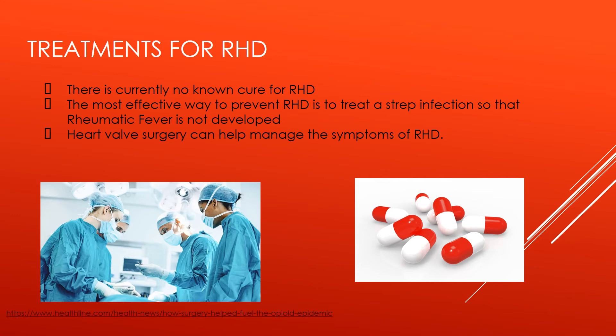There is currently no known cure for rheumatic heart disease, but the most effective way to reduce the risk is by preventing it. This is done by preventing the development of rheumatic fever, using antibiotics to treat strep infections, and using anti-inflammatory medicines to reduce inflammation of the heart. However, once rheumatic heart disease is developed, heart valve surgery can be performed to manage the associated symptoms.